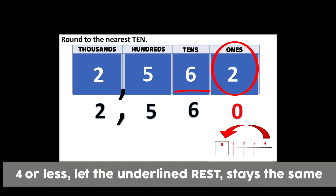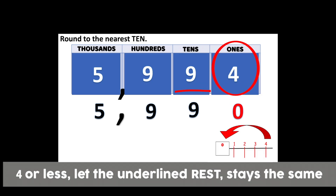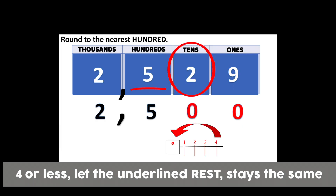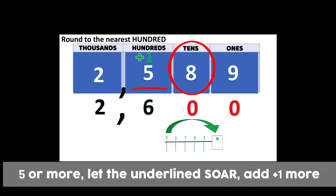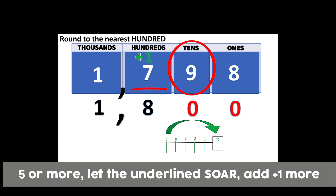If the circle is four or less, let the underline rest — stays the same. Five or more, let the underline soar — add one more. Four or less, let the underline rest — stays the same. Five or more, let the underline soar — add one more.